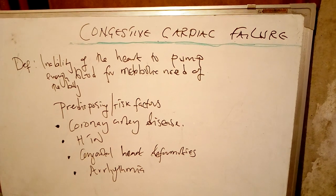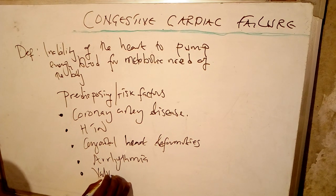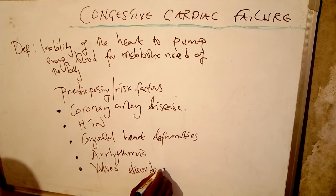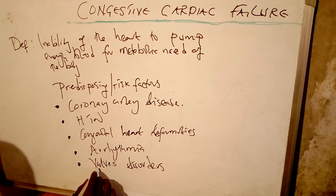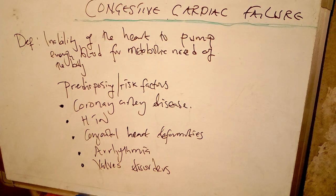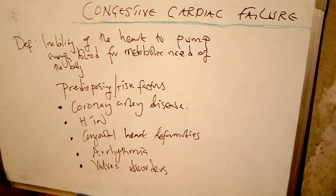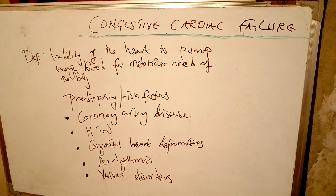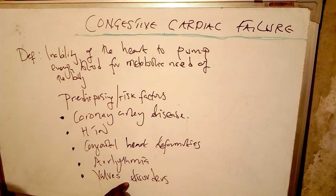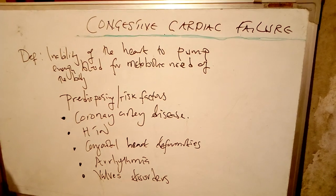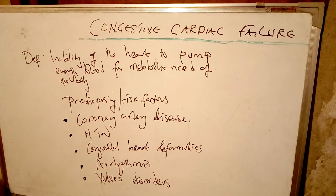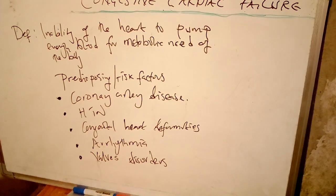We also have valvular disorders. Under valvular disorders, we can have stenosis of a valve. If we have stenosis of one of the heart valves, the heart will work at a faster rate with increased workload to eject blood into the systemic circulation. For example, aortic stenosis causes the left ventricle to increase its workload to empty blood, leading to hypertrophy of the heart muscle and congestive cardiac failure.